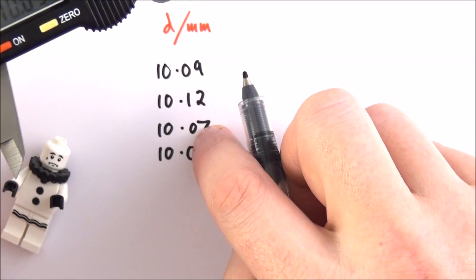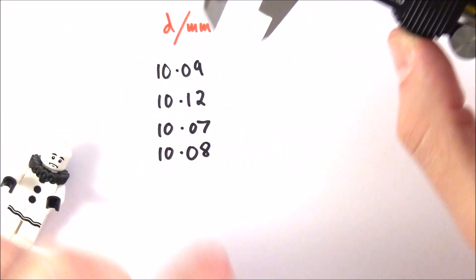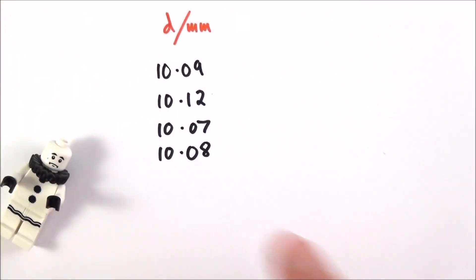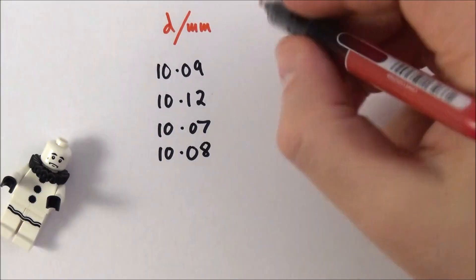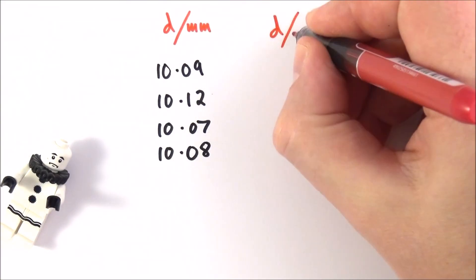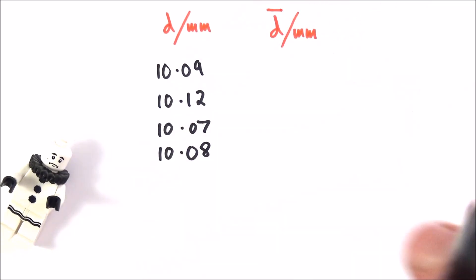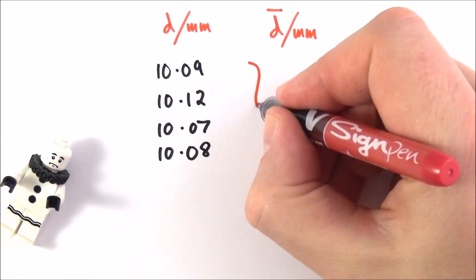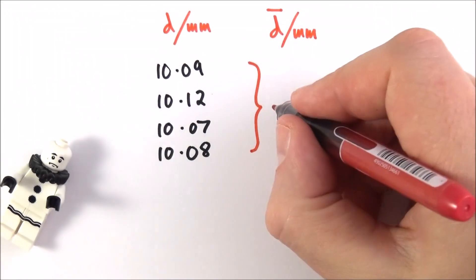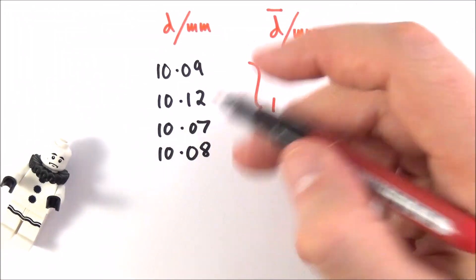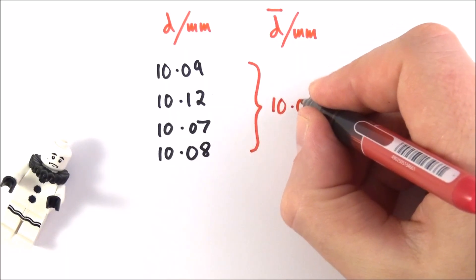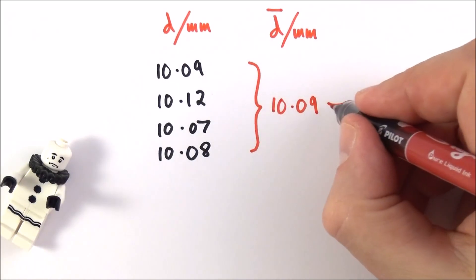Now the next step is I want to take the mean of these values. So I'm just going to call that d again in millimeters. I'm going to put a bar on top of it to show it's my average value. And if I put that into my calculator, I find that the actual value of the mean of these values is 10.09. Okay, so this is my mean value.